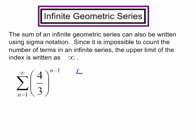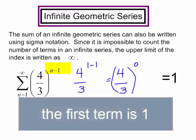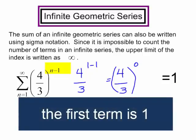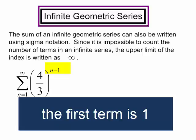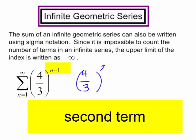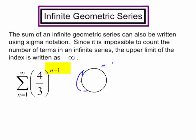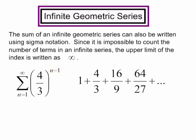Just to get an idea of how this infinite geometric series will look, let's write it out. If I have 4 thirds to the 1 minus 1, that would be 4 thirds to the 0, which is just 1. The first term is 1. What would the second term be? I will have 4 thirds, and that would be 2 minus 1, which is just 4 thirds to the first, which is just 4 thirds. It would look like 1 plus 4 thirds plus 16 ninths. Remember, I'm multiplying every one by 4 thirds plus 64 over 27. And it would go on and on and on.